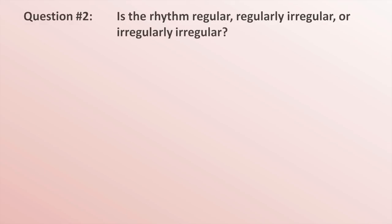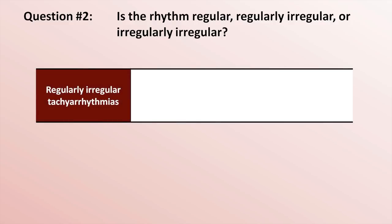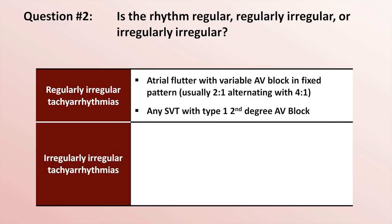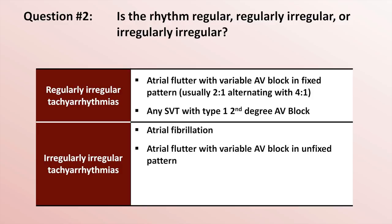Moving on to question 2: is the rhythm regular, regularly irregular, or irregularly irregular? While regularly irregular bradyarrhythmias — particularly type 1 second degree AV block — are not rare, regularly irregular tachyarrhythmias are rare. The only two examples are atrial flutter with variable but consistently variable AV block, and any SVT superimposed on type 1 second degree AV block. Regarding irregularly irregular tachyarrhythmias, there are only four: AFib, AFlutter with inconsistently variable AV block, MAT, and polymorphic VT.